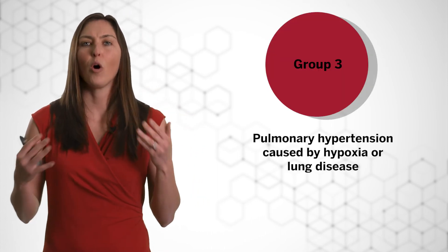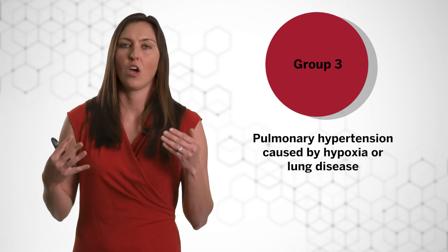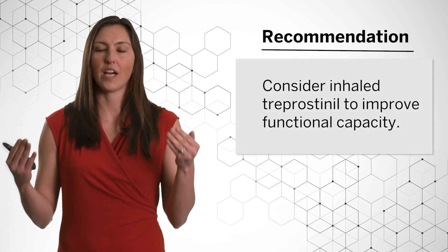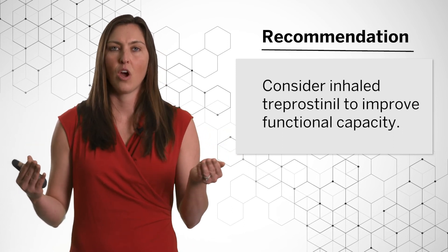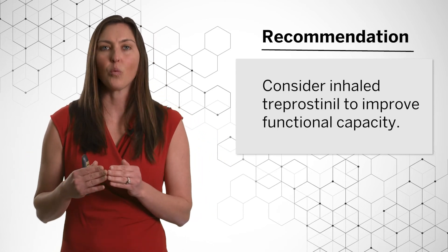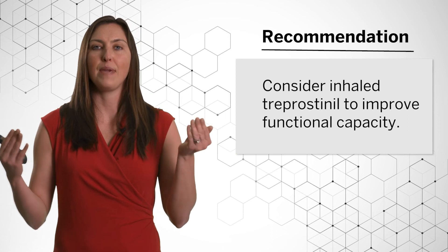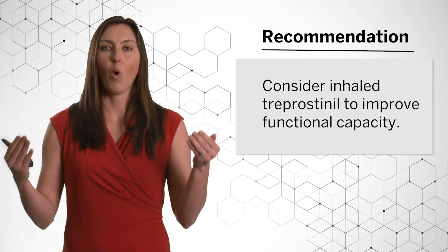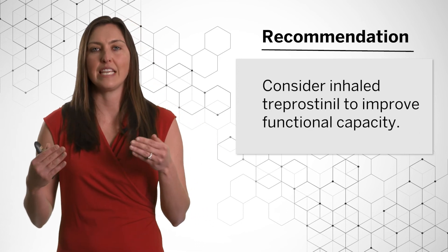Next, we are moving on to group three, which is pulmonary hypertension caused by hypoxia or lung disease. Therapy has been focused on optimizing the lung disease or correcting the hypoxia. However, recently studies have demonstrated that those with underlying interstitial lung disease given inhaled Tyvaso had an increase in six-minute walk distance. Patients with underlying interstitial lung disease who have evidence of pulmonary hypertension are now typically being referred to tertiary centers for consideration of inhaled Tyvaso as a therapy to improve six-minute walk distance or functional status, while also confirming their lung disease is treated to the best of their ability.